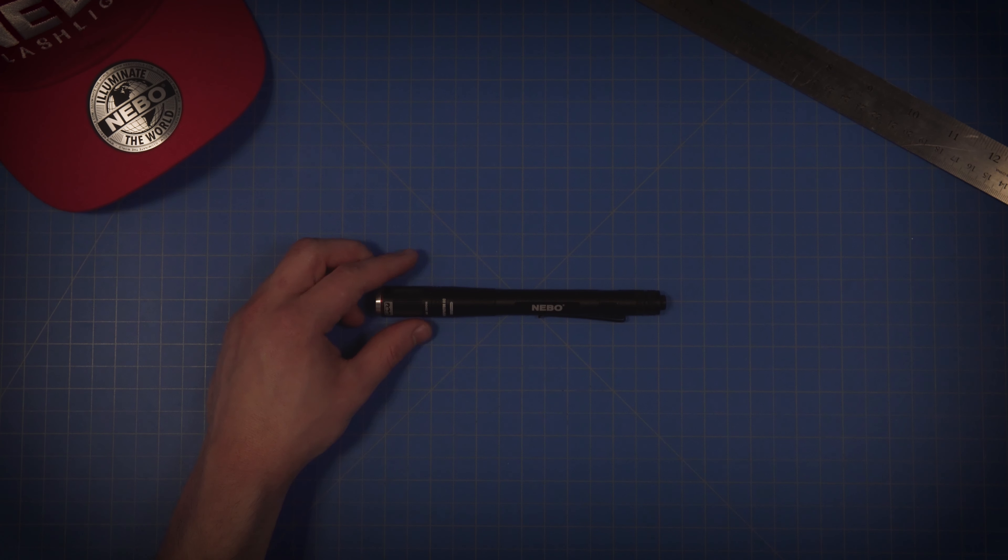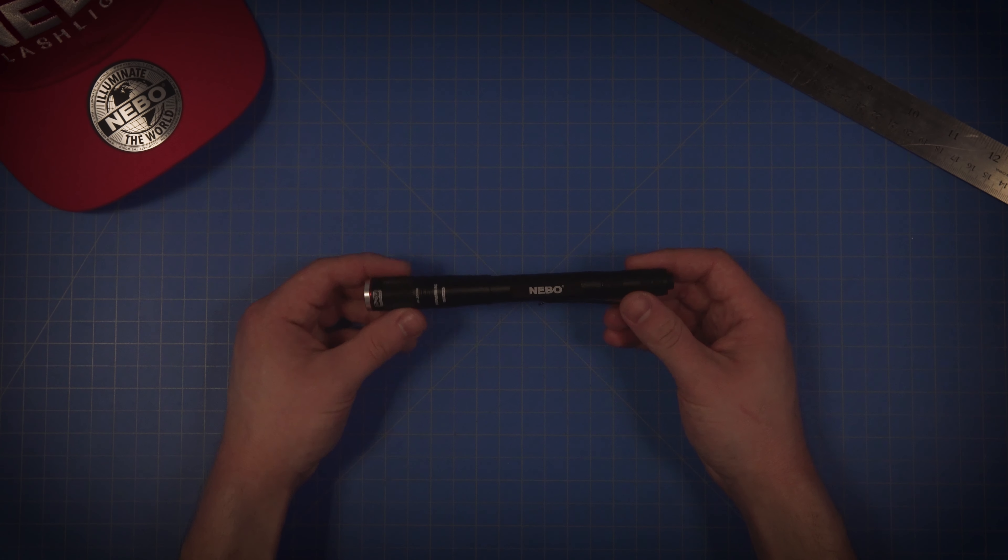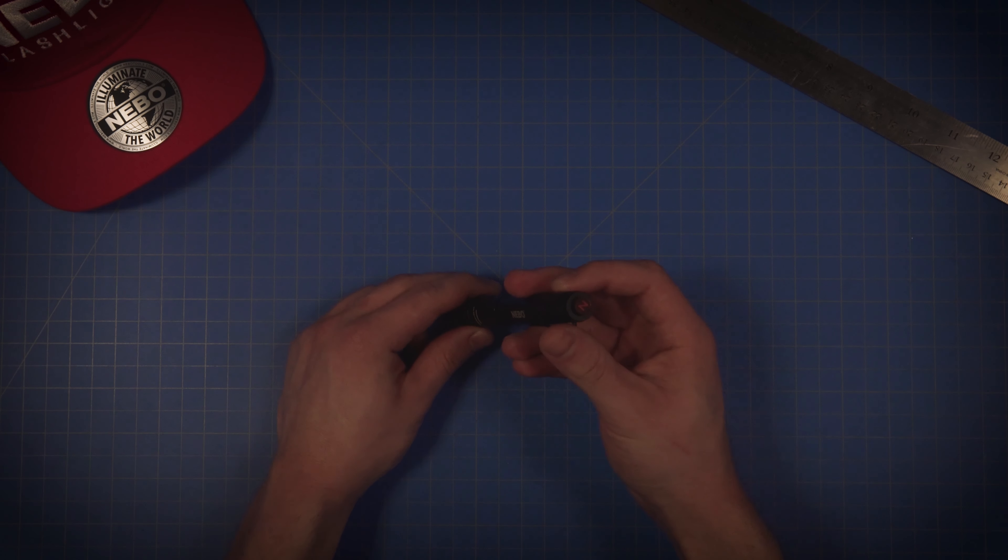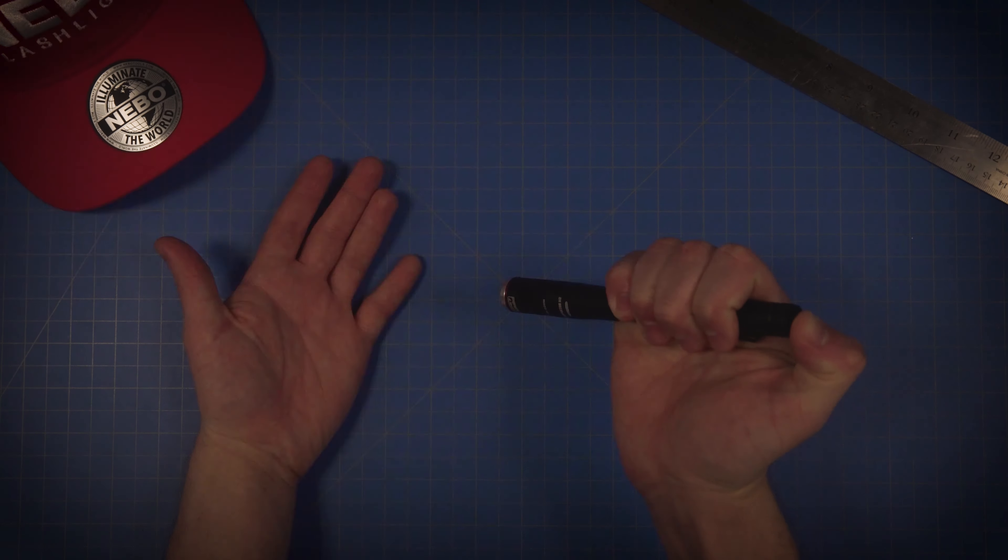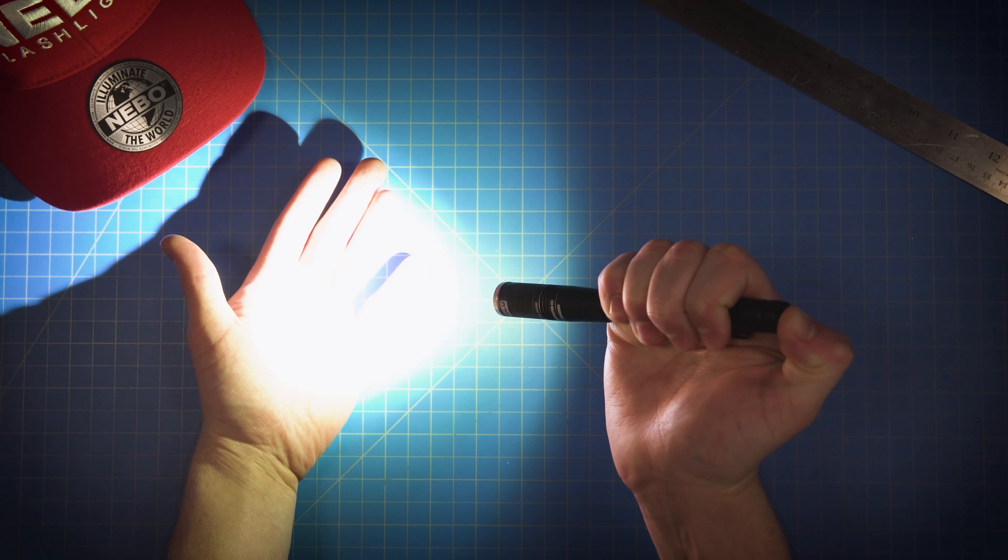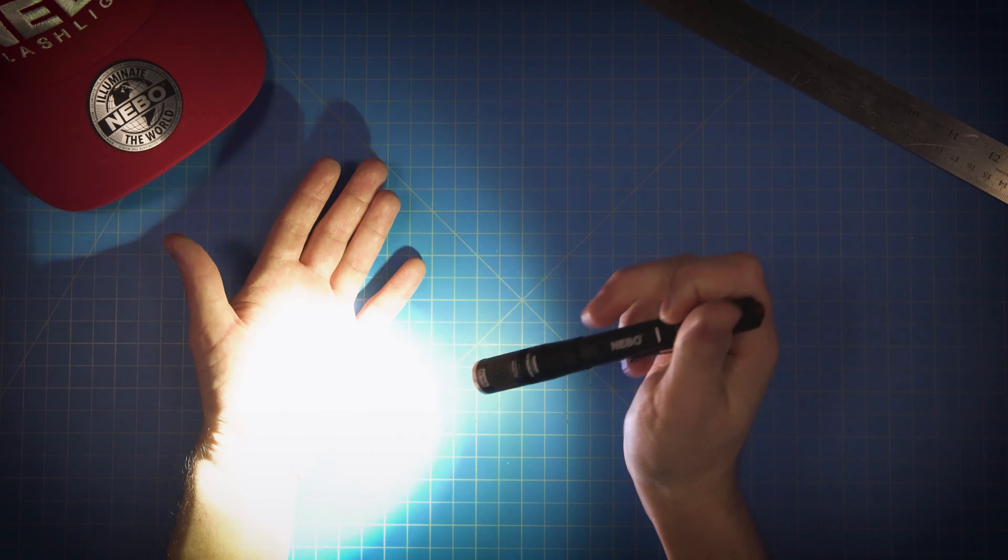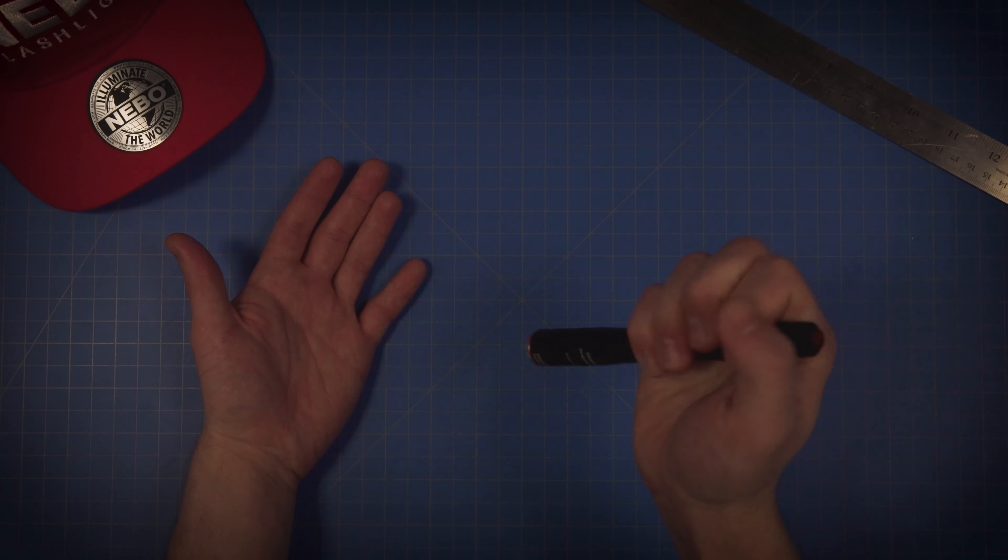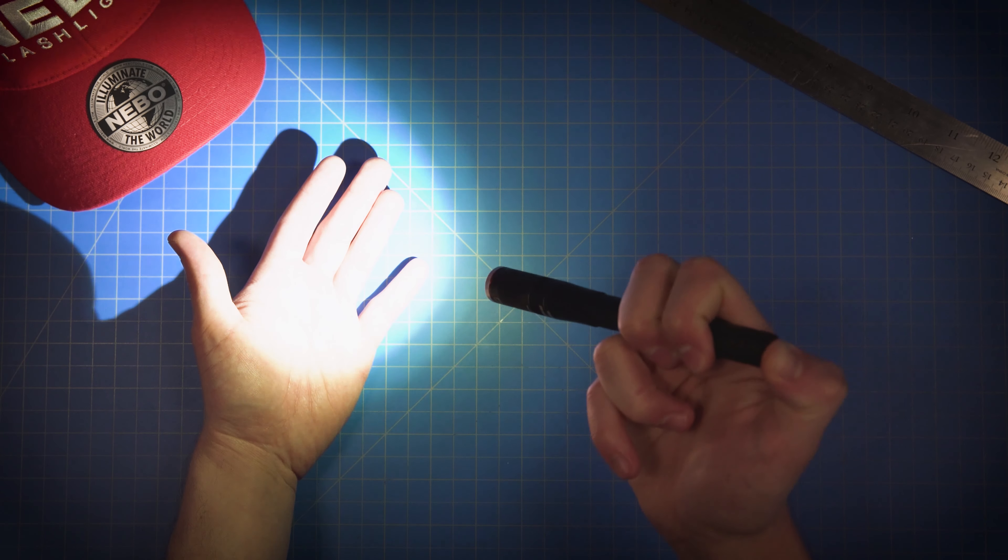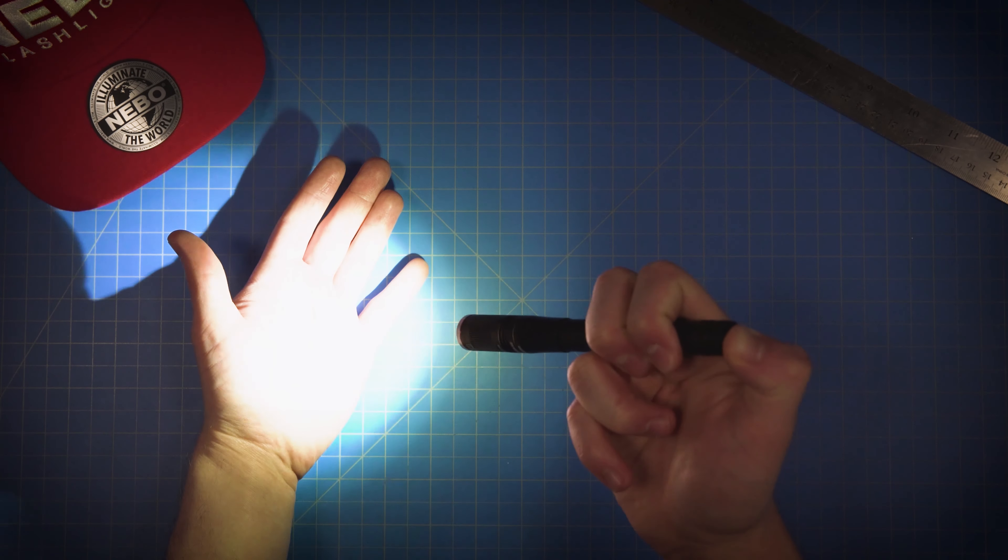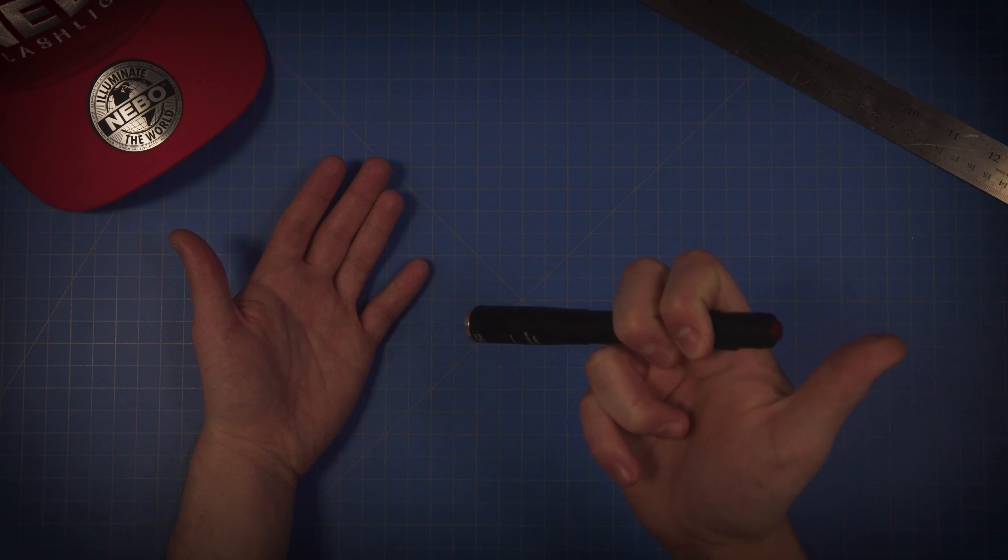Also included in the Inspector RC is soft touch technology. To use soft touch technology, from off, simply press the button down about halfway until you get to the mode you want. You can then lock in the mode by pressing the button in all the way. Or if you don't want to turn the light all the way on, you can simply hold the button down about halfway to keep the light on until you release it. This is useful for when you want to look at something quickly without leaving the light on.